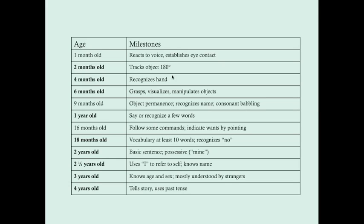Here are some cognitive milestones: at four years of age, a child should be able to tell a story and use past tense. At three years of age, they should know their age and sex, and should be about 75% understood by strangers.